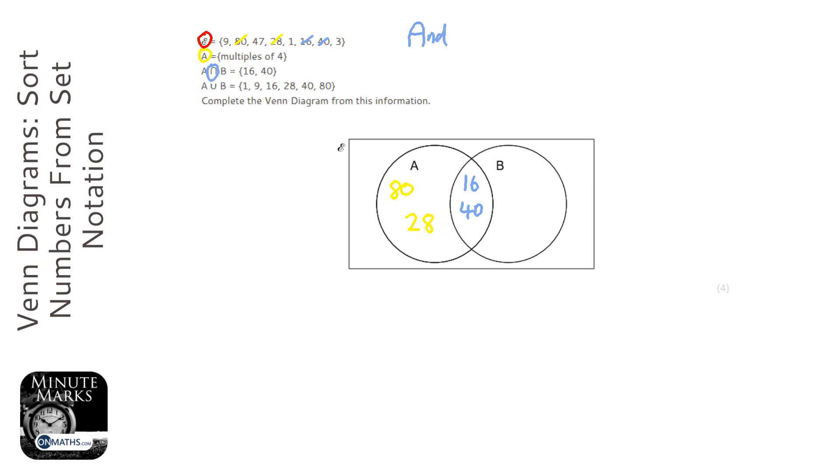Now we can't fill in the rest of them into B because they could be outside the Venn diagram. So we've got to just stop a little bit and have a think. So this last one says A union B.